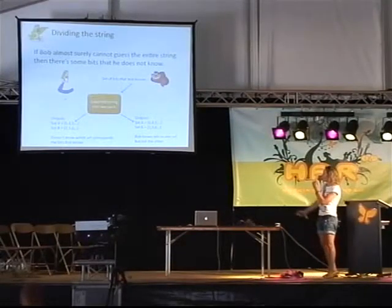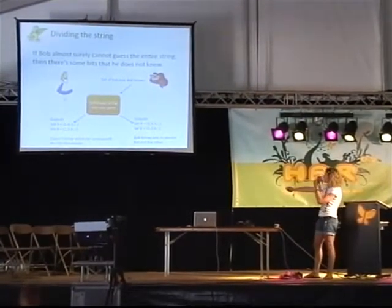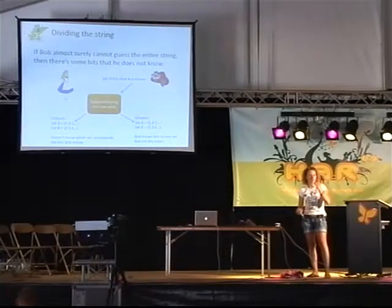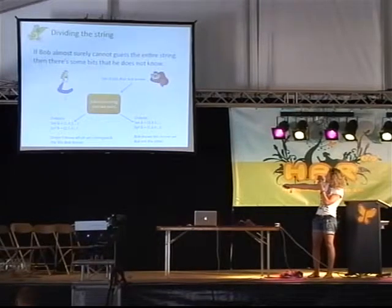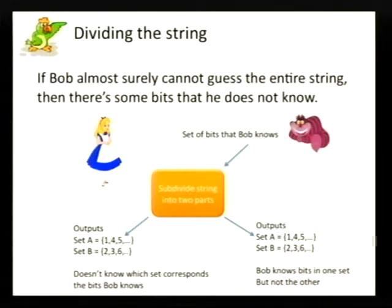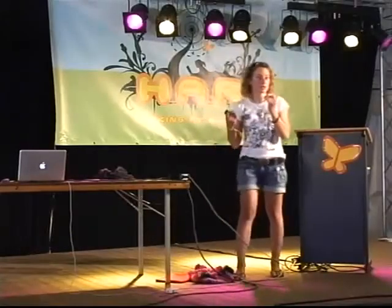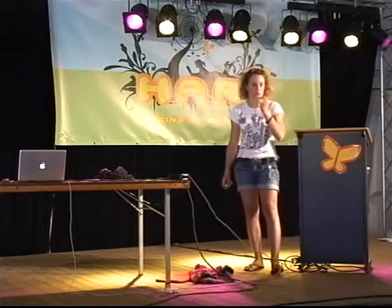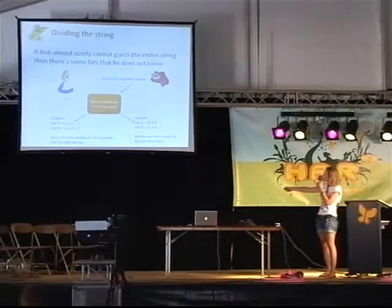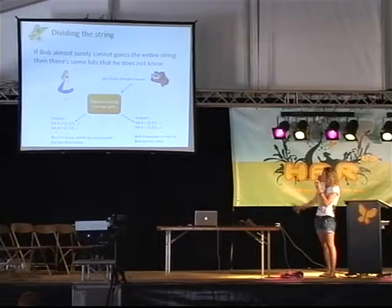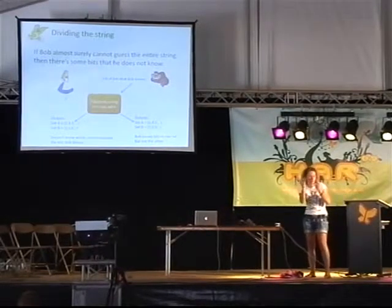There exists a primitive called interactive hashing that does the following. Bob inputs which bits he knows — say bits three, four and five. This primitive subdivides the total string into two parts and outputs two sets: set A, say positions one, four, five, and set B, say positions two, three, six. Crucially, Alice does not know which of these two sets contains the bits that Bob knows, but Bob knows exactly which set contains his known bits, and in fact he will know all the bits in one of the two sets but only a few bits in the other.